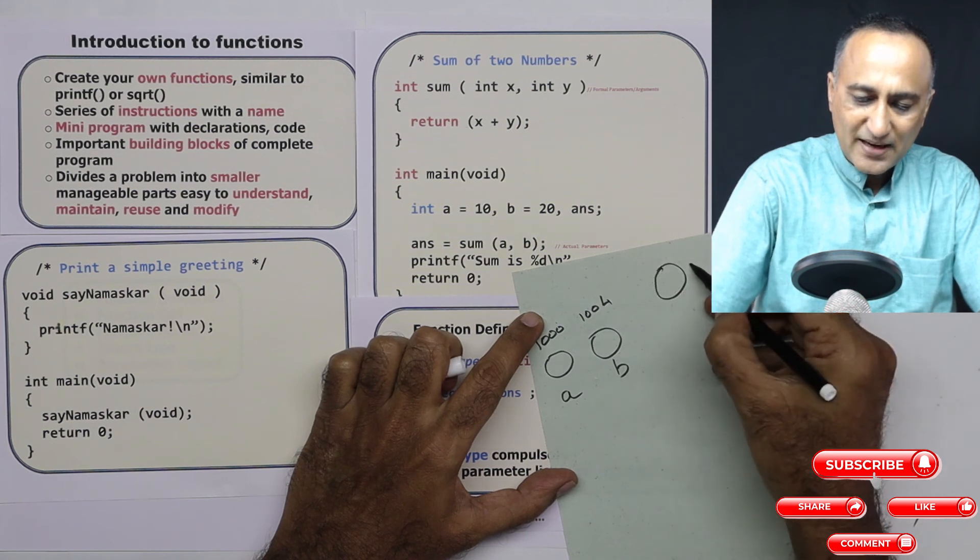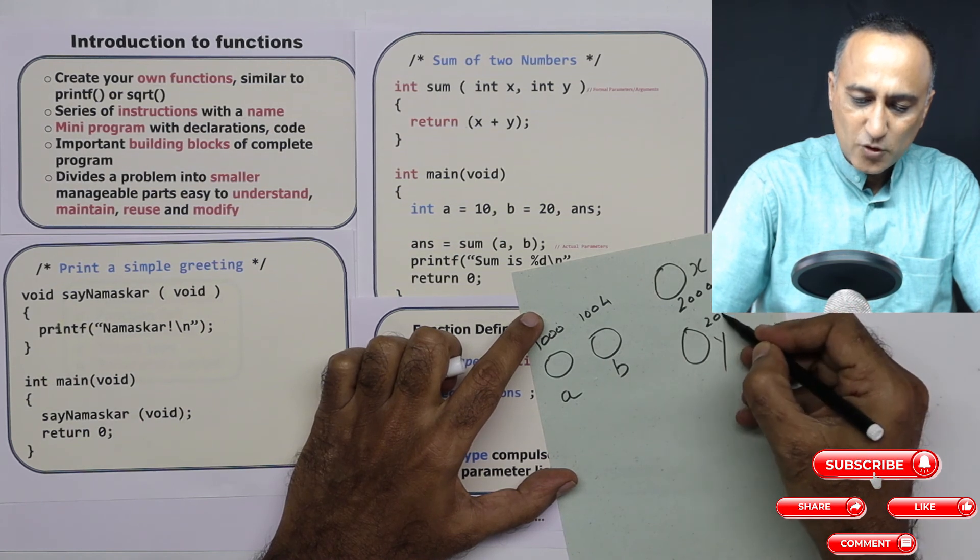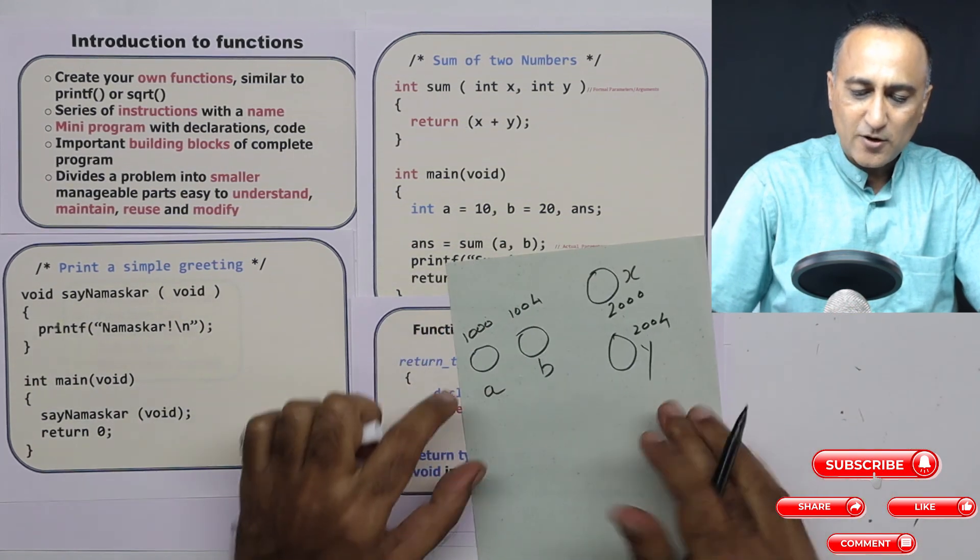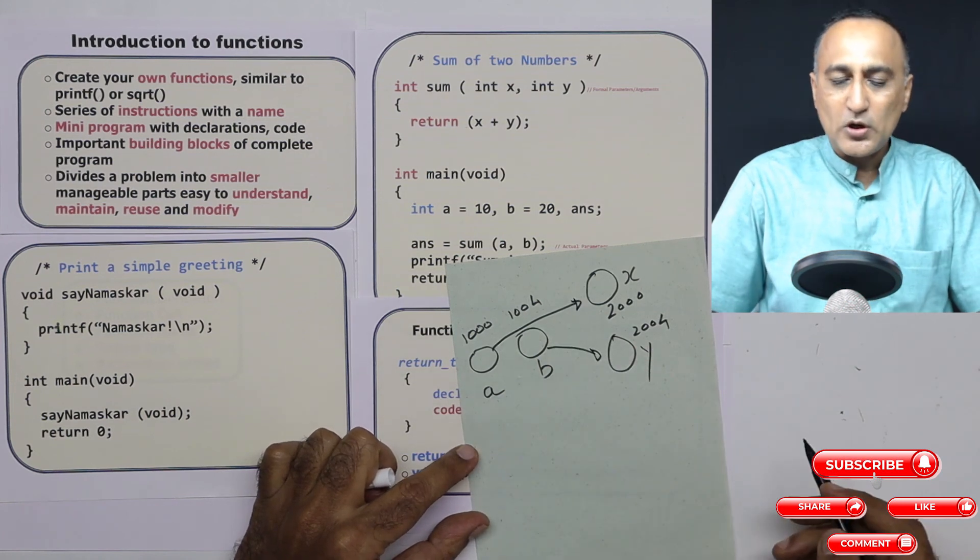You can think of x and y in two different memory locations. This is in location 2000 and 2004. So the value of a gets copied to x, the value of b gets copied to y.